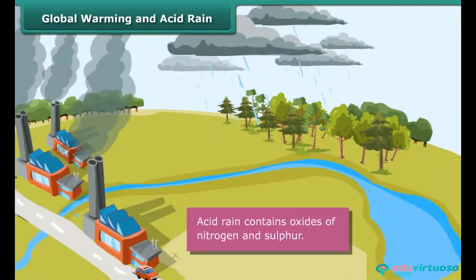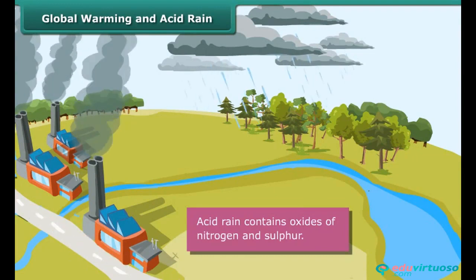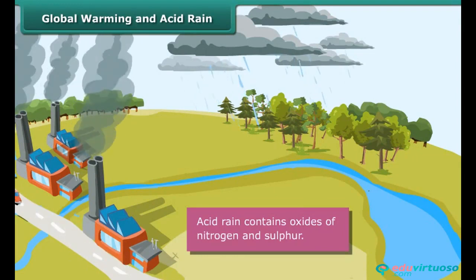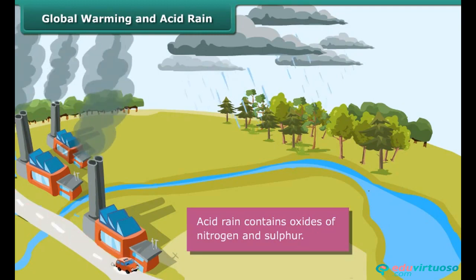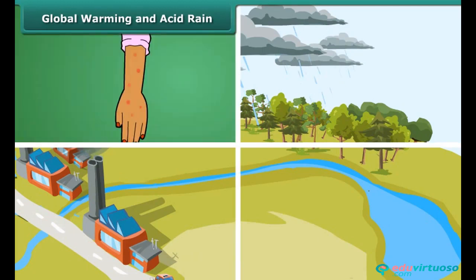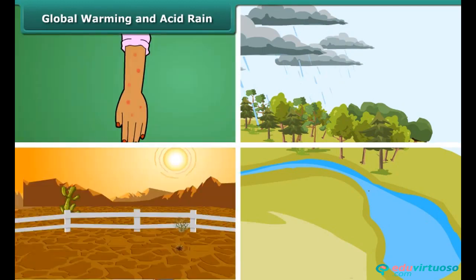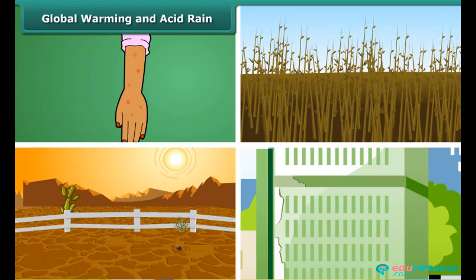Another harmful effect of air pollution is acid rain. Rain water that contains oxides of sulfur and nitrogen released from industries and petrol engines in dissolved state may cause huge damage to skin, soil, standing crops, and buildings.